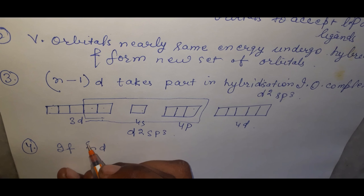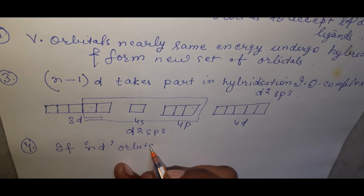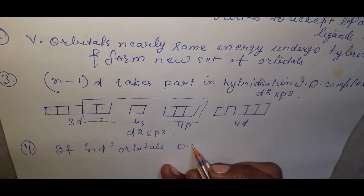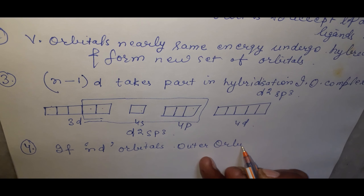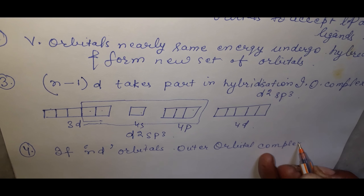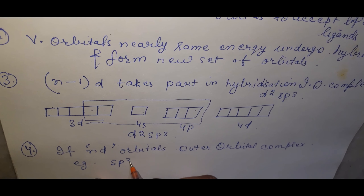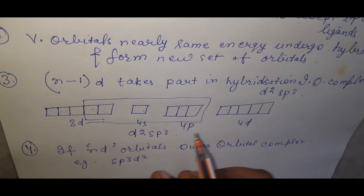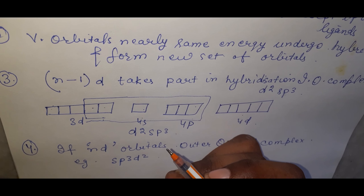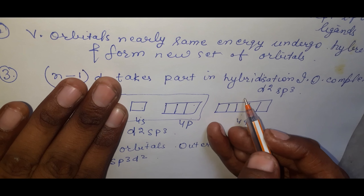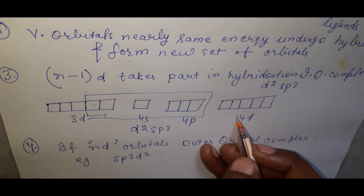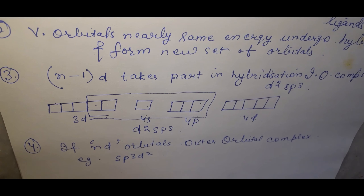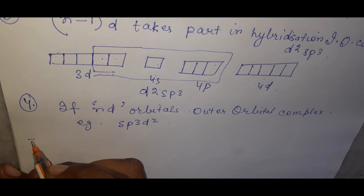Postulate number four: if nd orbitals participate in hybridization, it is called an outer orbital complex. For example, sp³d² — using 4s, 4p, and 4d orbitals — the two d orbitals are taken from the outer 4d level, giving sp³d² hybridization.